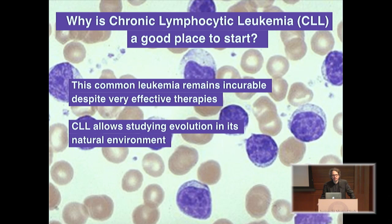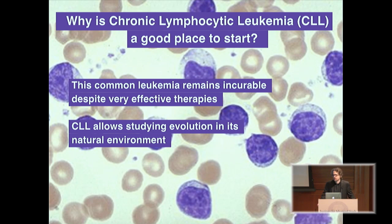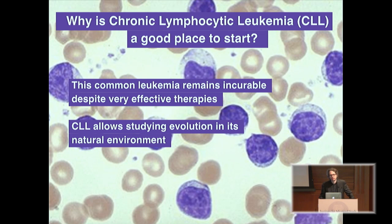CLL is a good place to start studying these questions from the clinical perspective because it epitomizes the challenge that cancer evolution poses to modern oncology. This is a leukemia that we can treat effectively—we have effective therapy that induces deep remissions—and yet the disease almost invariably comes back again. One of the advantages of this leukemia is that we're able to sample the cancer cells continuously over time directly from the patient's blood with simple blood draws instead of invasive biopsy. You can think about this as the easiest liquid biopsy, and I'll return to that concept later.